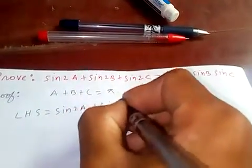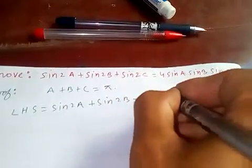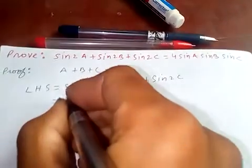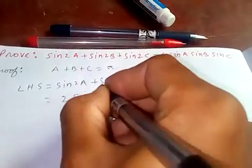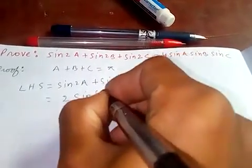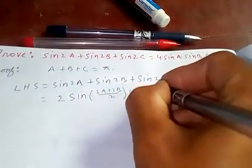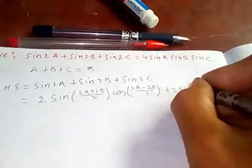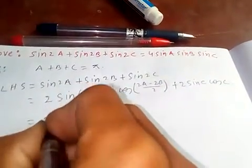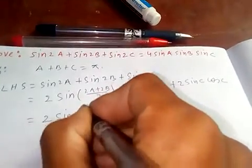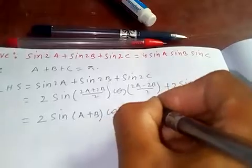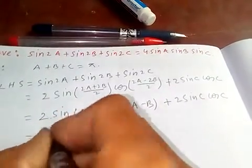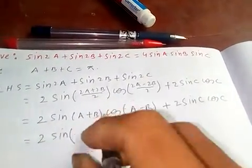If you apply the sum-to-product formula to sin(2A) + sin(2B), which gives 2·sin((A+B)/2)·cos((A−B)/2), plus sin(2C). We know sin(2C) = 2·sin(C)·cos(C), so we have 2·sin((A+B)/2)·cos((A−B)/2) + 2·sin(C)·cos(C).